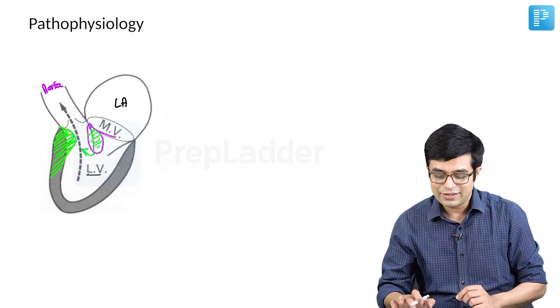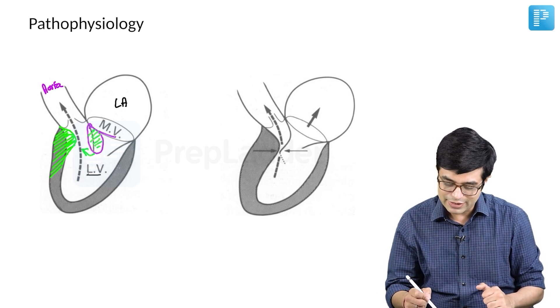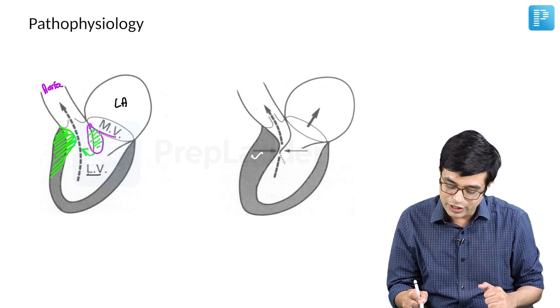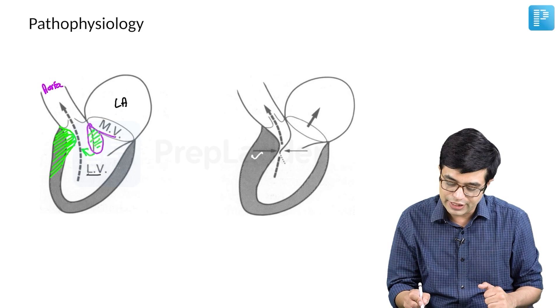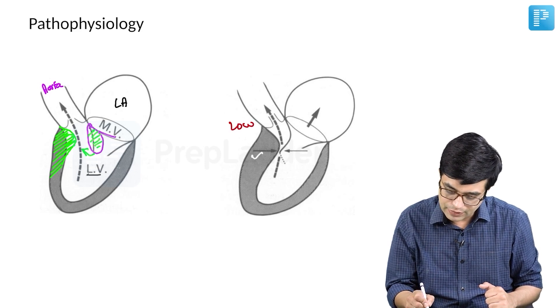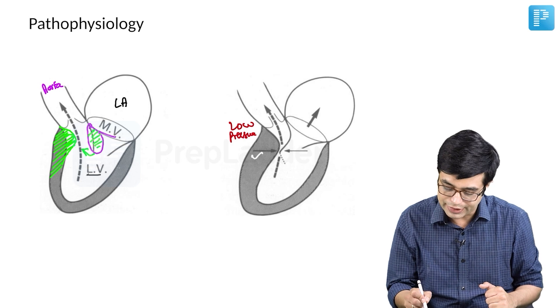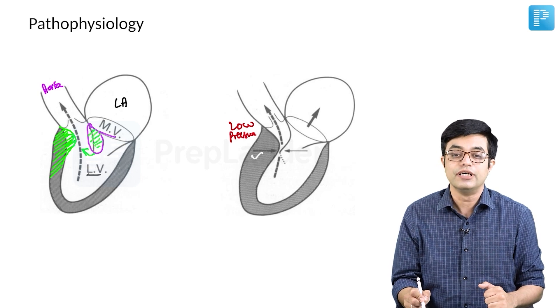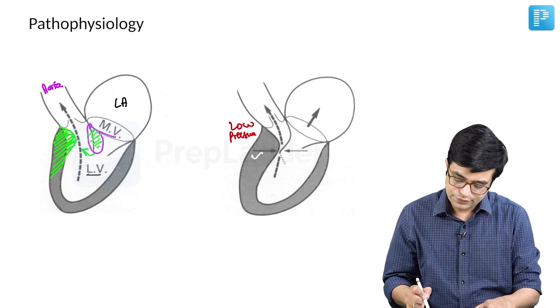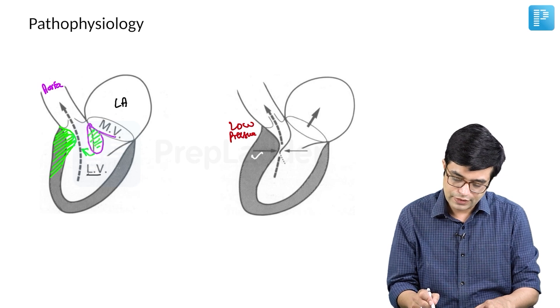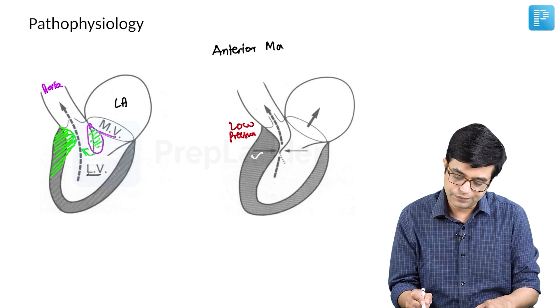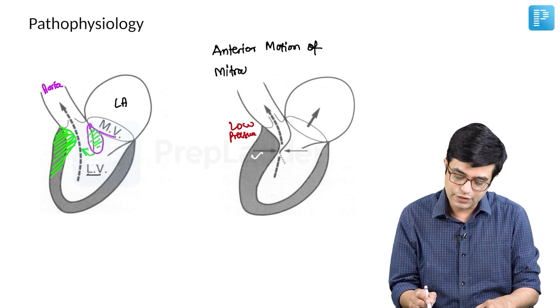To illustrate, look at this diagram. There is asymmetric septal hypertrophy here. Now when fluid is moving through a narrowed area, low pressure area was created here. And due to this low pressure area, the mitral valve leaflet moved inwards producing a complete obstruction. This is called as